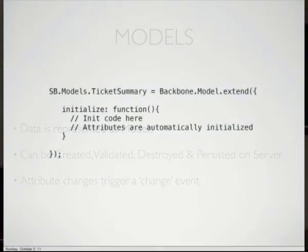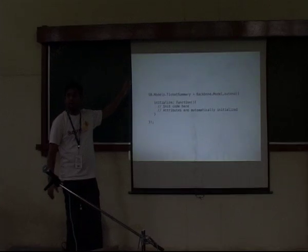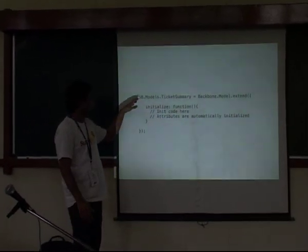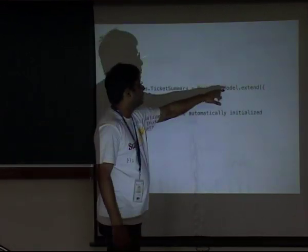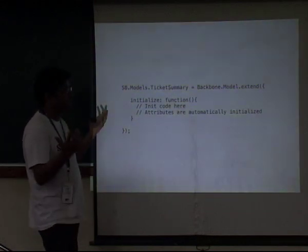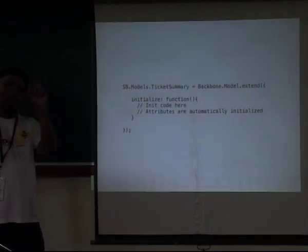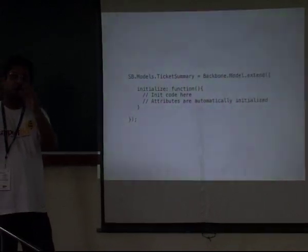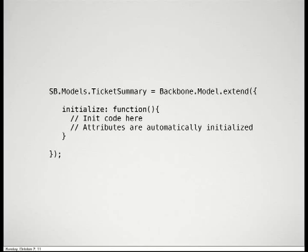Here's how you make a model. You just namespace in JavaScript — you make something like SupportBee.Models.TicketSummary. You extend from a Backbone model, you can do your init code there, and that's pretty much it. Every time you get a JSON object back, Backbone will take all the attributes and create them automatically. All that work is done for you. This is the TicketSummary model which will be used to render that row.